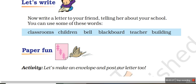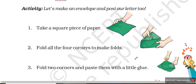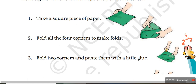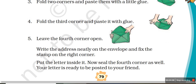Next is Paper Fun. In this activity you have to make an envelope. Make a letter and make an envelope — write a letter and post it. What you have to do is: take a square piece of paper, fold all the corners to make folds. Then fold two corners and paste them with a little glue. Because if you don't paste it, the letter will fall open. Fold the third corner and paste it with glue. Three corners means you paste them on one another, and leave the fourth corner open — and your envelope is ready. Now you can put your letter inside and give it to your friends.